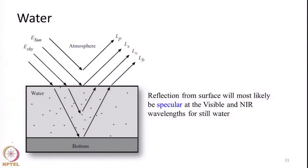When we take water, the reflectance that we observe from water bodies can take several different paths. If you take the radiance — let us assume the sensor is located here — the radiance reaching the sensor from a water body can come from different paths. The first can be pure path radiance from the atmosphere, which we are not interested in.